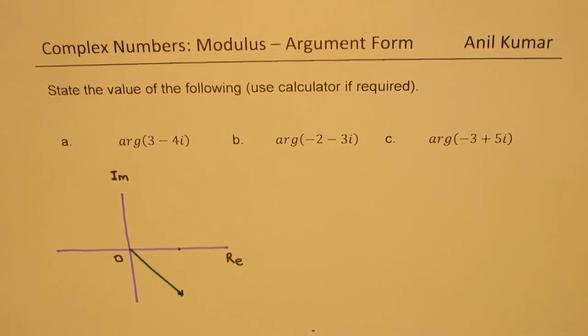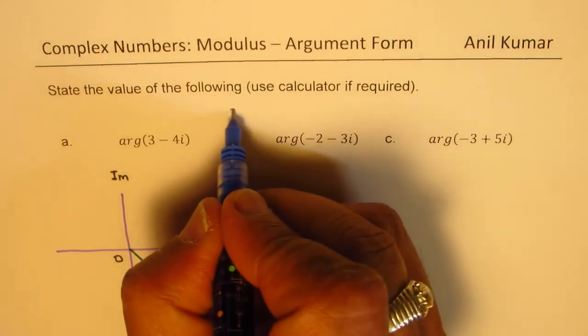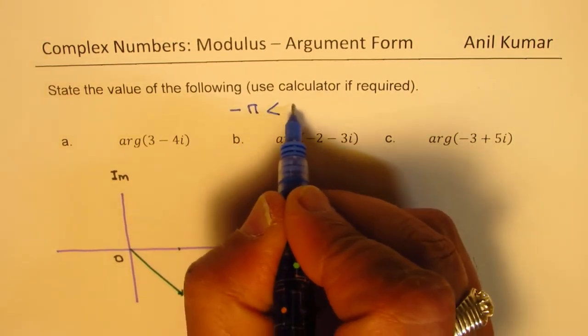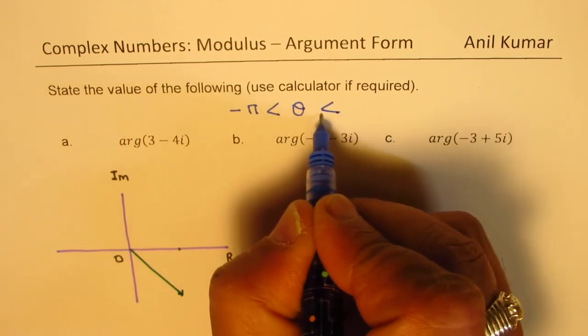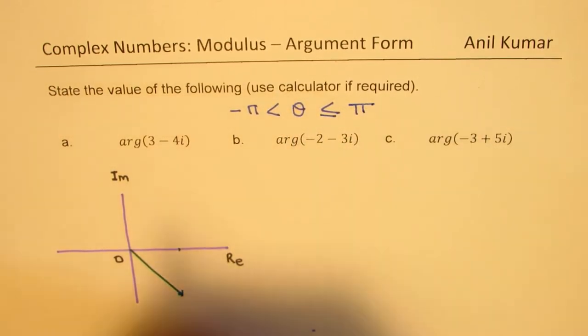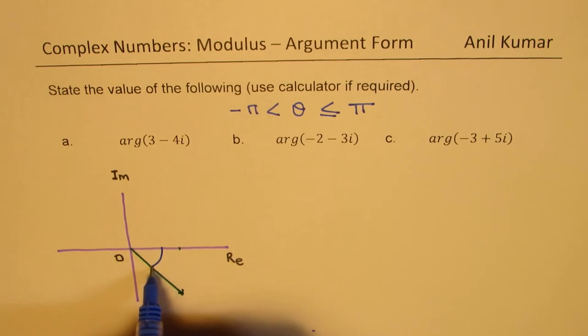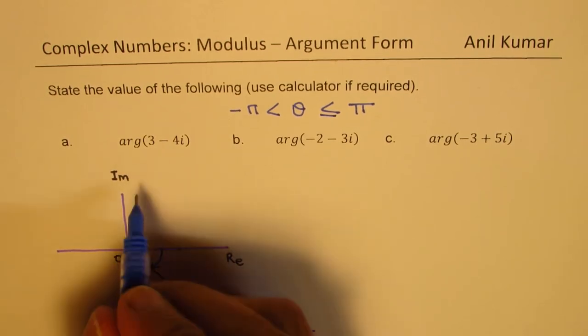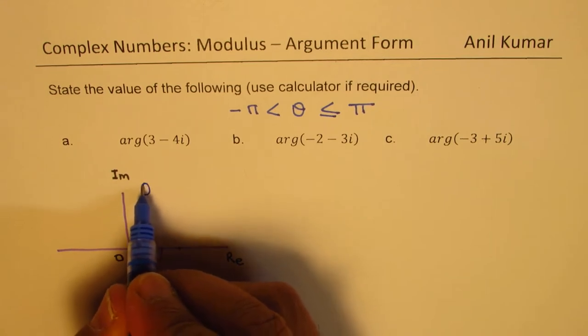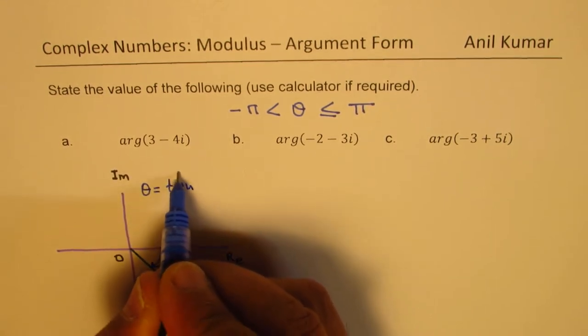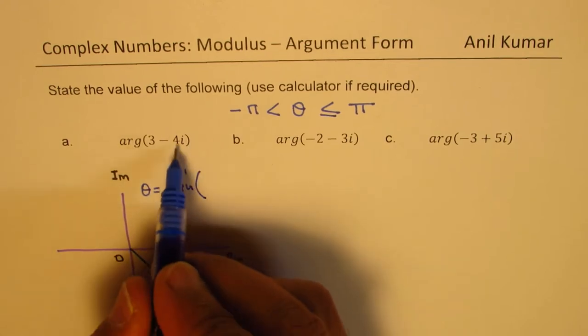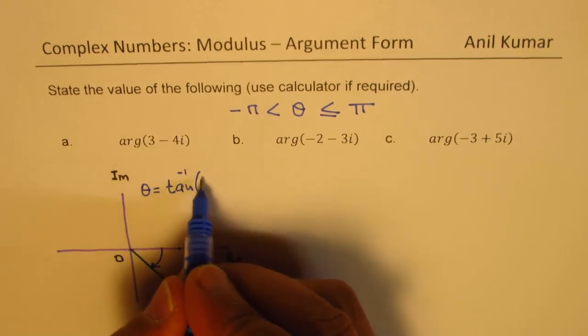Now the answer for this has to be between minus π to π. So that is the answer which we are looking for. We can use the calculator and find the value. So the value of θ is basically equal to tan inverse of y over x, which is minus 4 over 3.